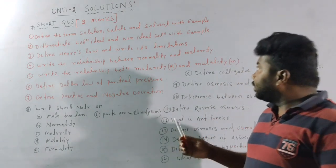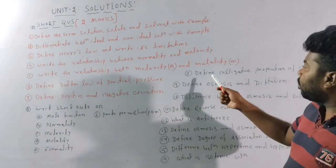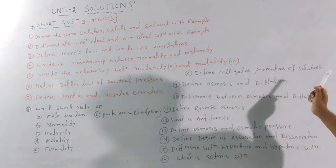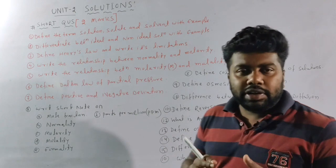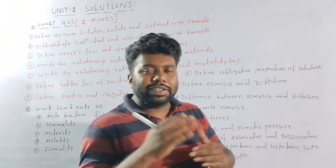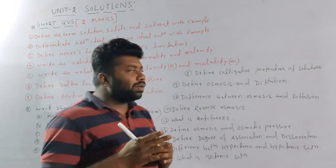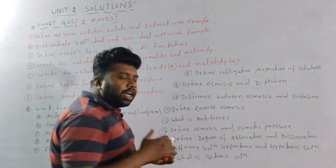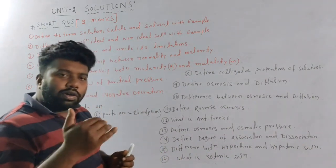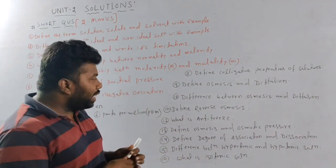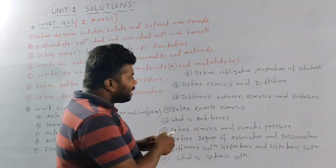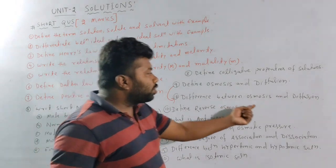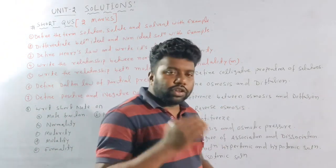Next: define the colligative properties of solution — you can write two or three properties. Next: define osmosis and diffusion.